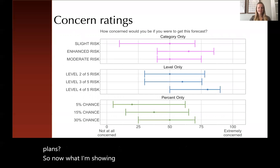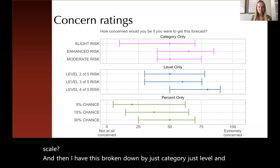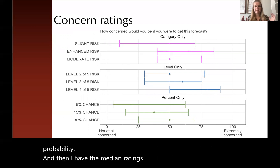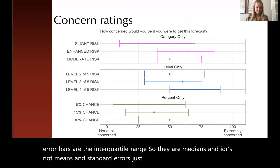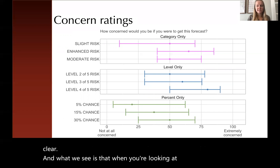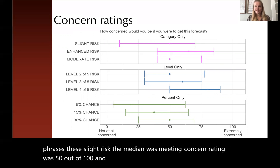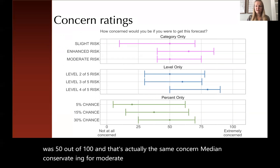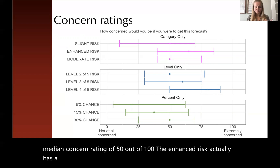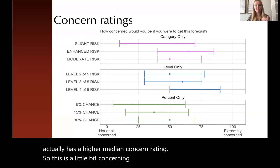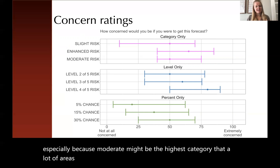On the x-axis is the 0 to 100 scale, broken down by just category, just level, and just probability. The median ratings are shown as the dot, and the error bars are the interquartile range — so these are medians and IQRs, not means and standard errors. When looking at just the categorical phrases, the slight risk median concern rating was 50 out of 100, which is the same median concern rating for moderate risk. The enhanced risk actually has a higher median concern rating — so once again we are seeing this misordering of the enhanced and moderate categories, which is particularly concerning since moderate might be the highest category many areas ever see.